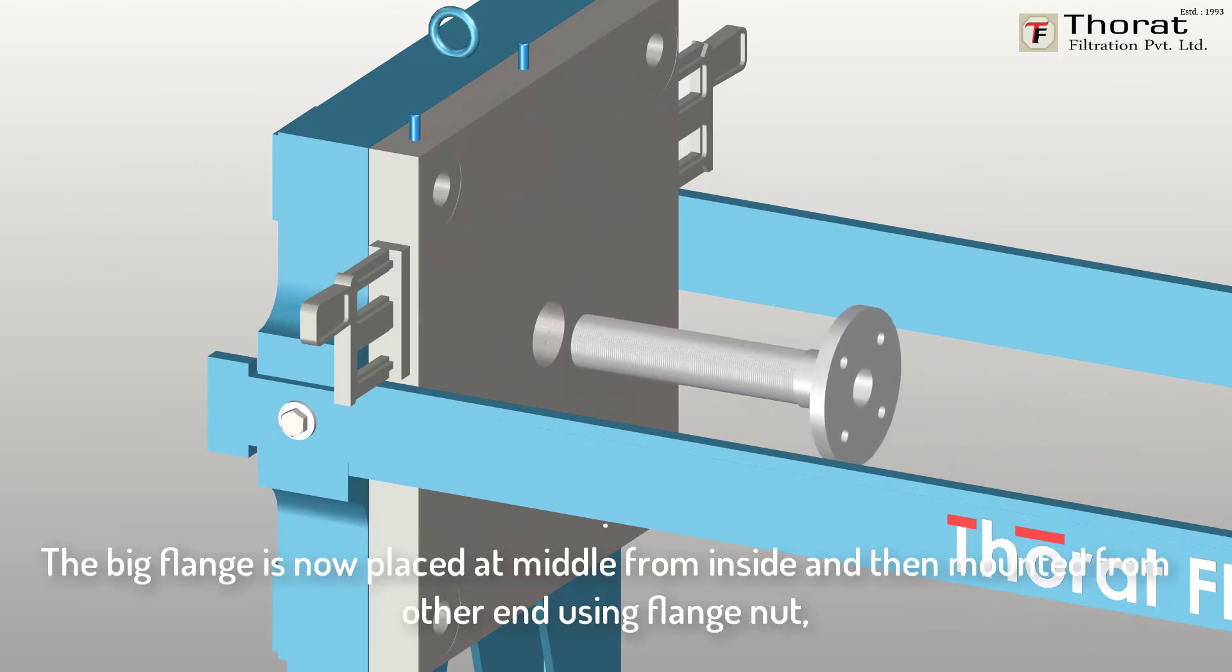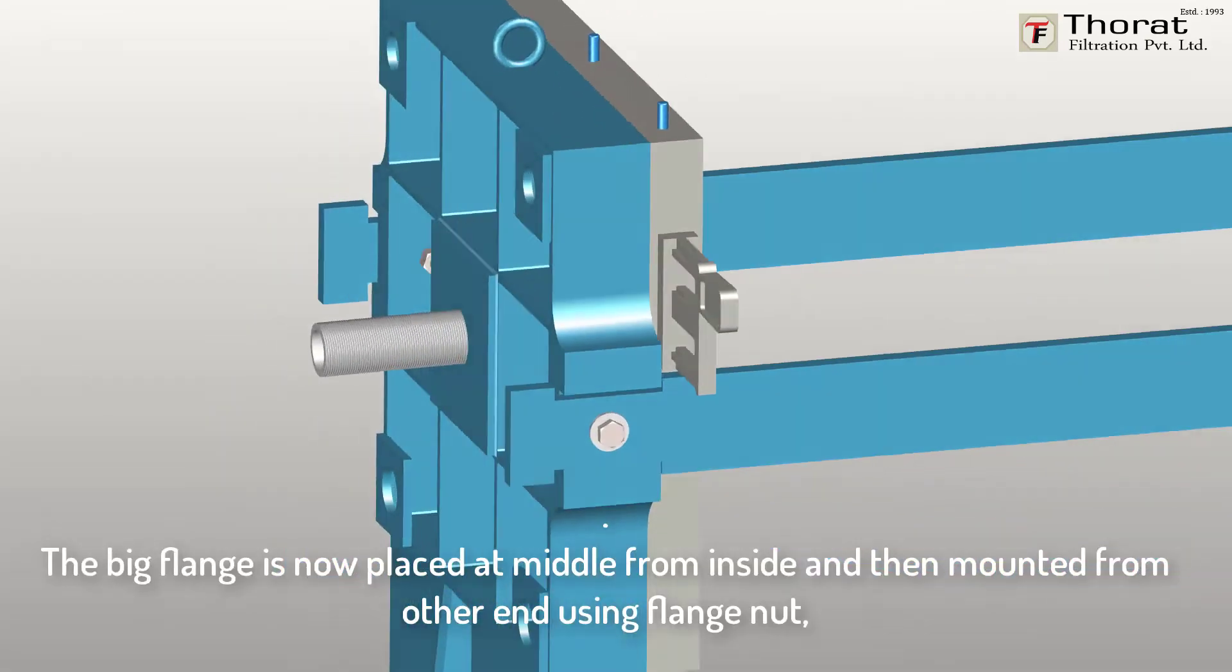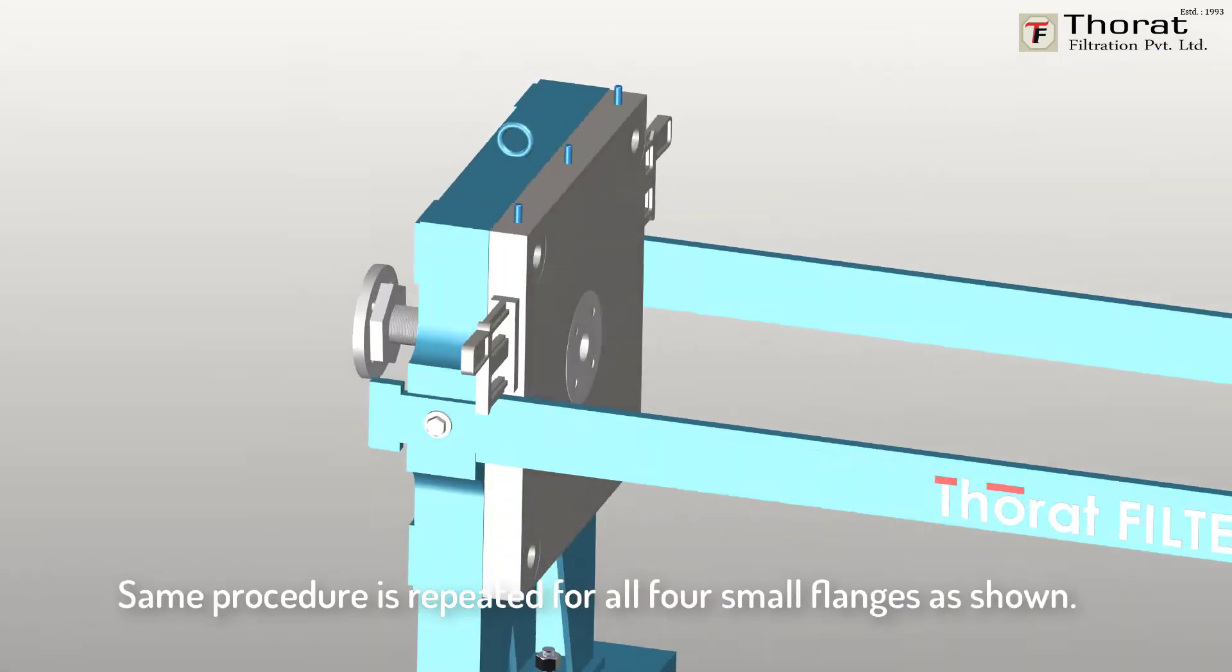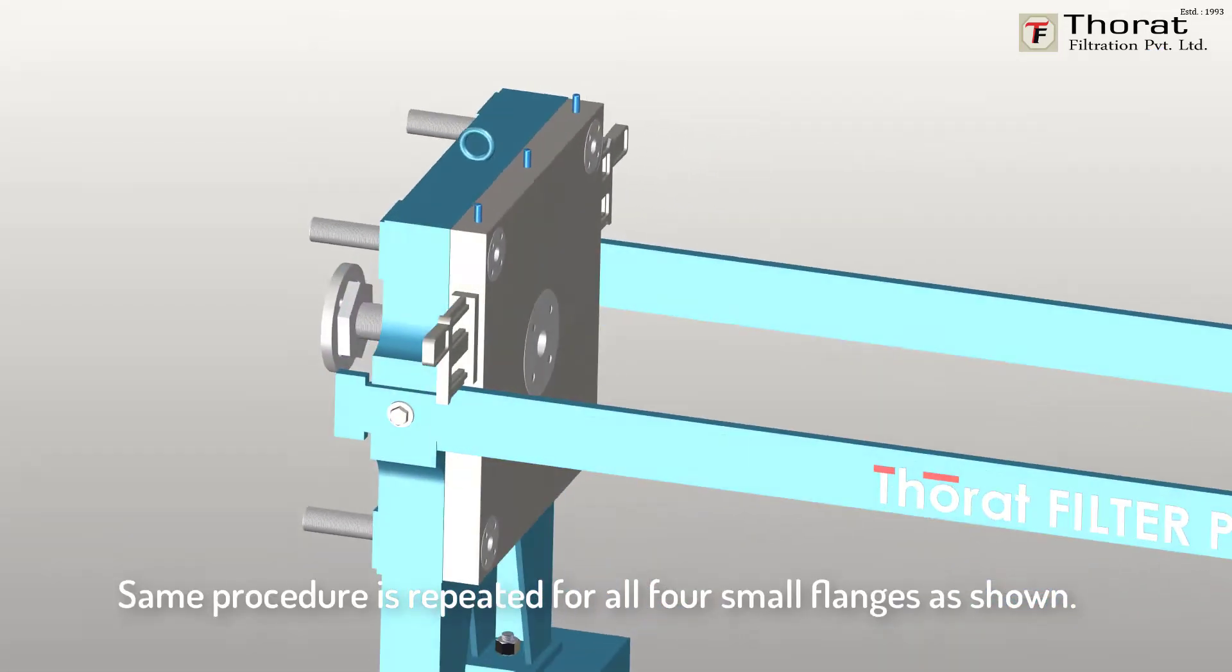The big flange is now placed at middle from inside and then mounted from other end using flange nut. Another flange is mounted at this end so the slurry pipe can be mounted here. The same procedure is repeated for all four small flanges.